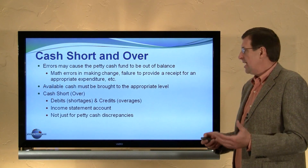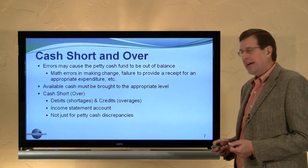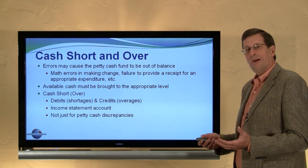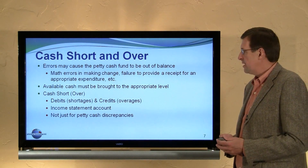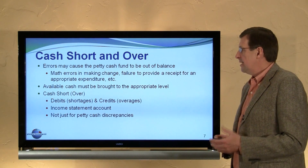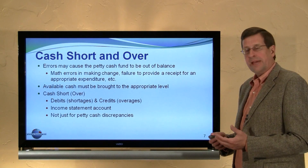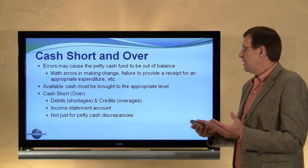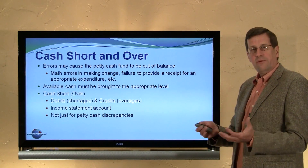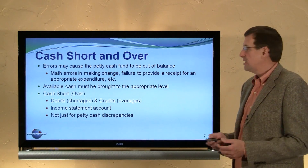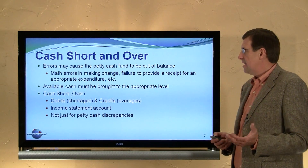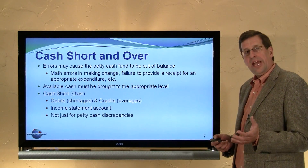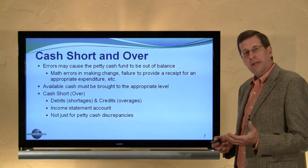A debit to cash short or over reflects a cash shortage; a credit would reflect an excess amount of cash beyond the expected amount. The cash short or over would be an income statement adjustment — it's probably not material, hopefully — but it would be a miscellaneous expense or a type of adjustment. It's not just for petty cash discrepancies, but any cash short or over situation.